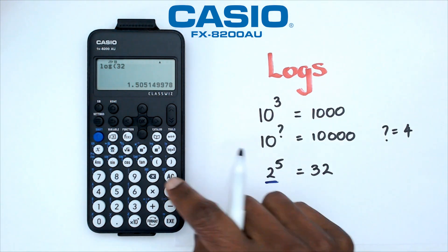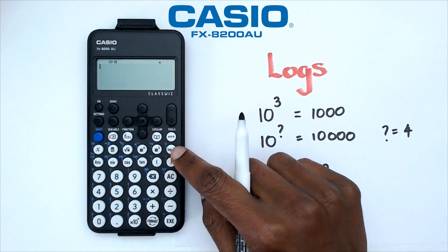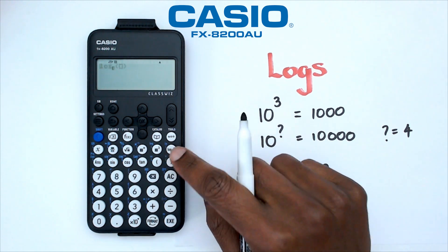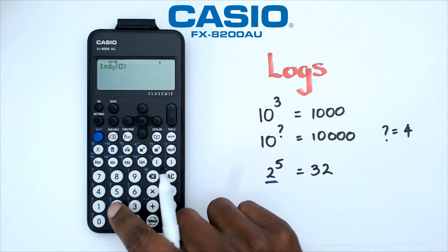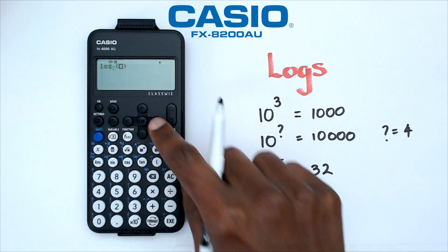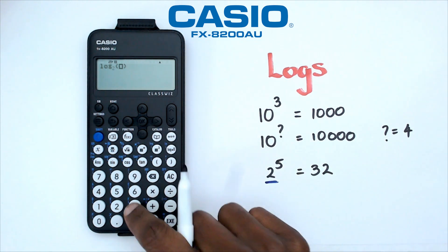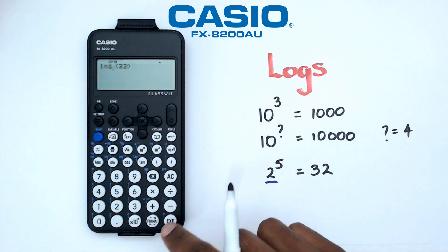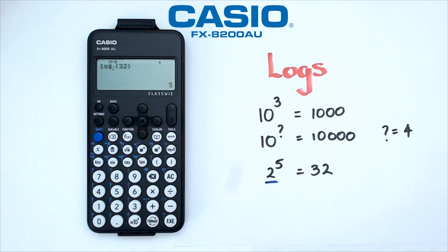To fix that, we press the log button with the two boxes, set the base as 2, and the number as 32. When we do this we get an answer of 5.